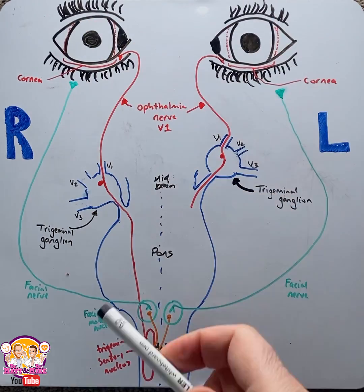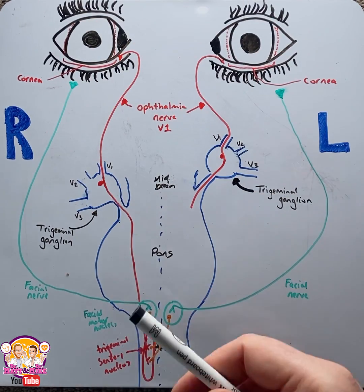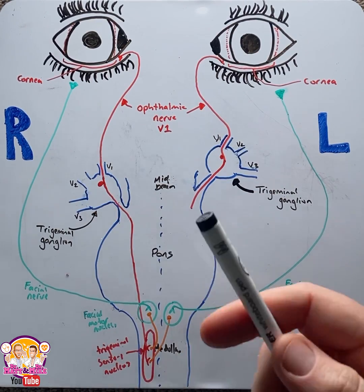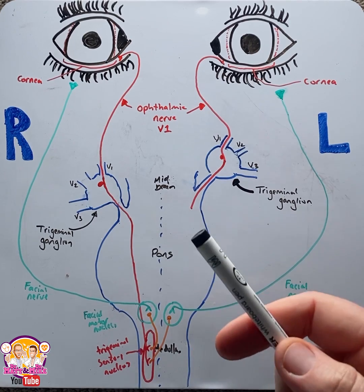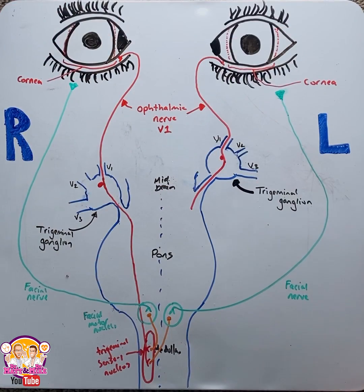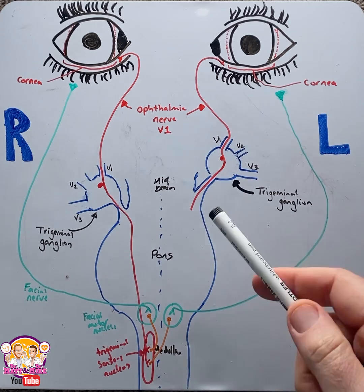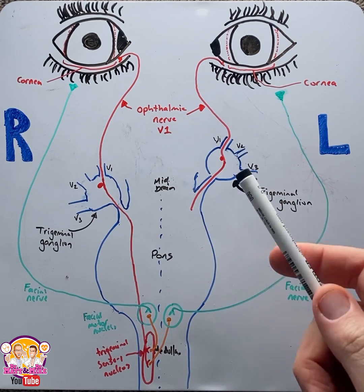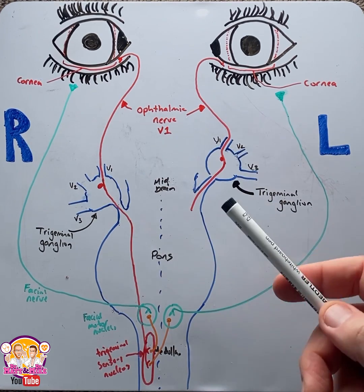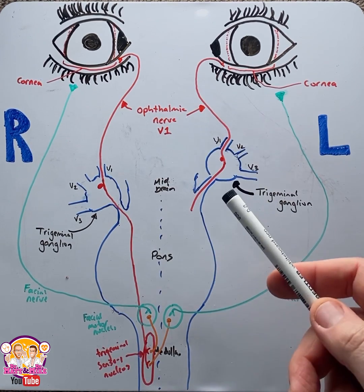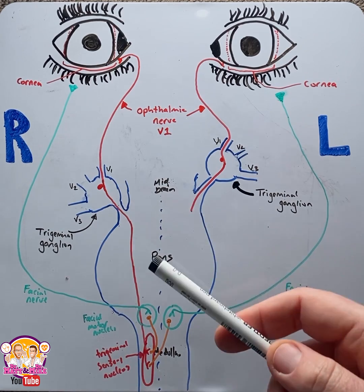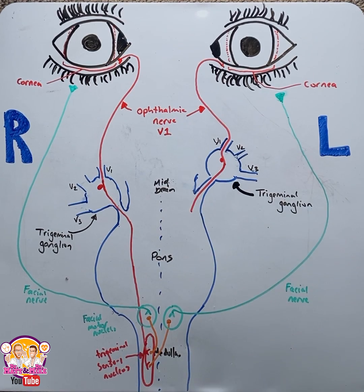The human cornea is one of the most richly innervated structures for pain in the human body. Therefore, the corneal reflex acts as a mechanism to protect the eye against harmful stimuli. Clinicians often test the corneal reflex in their evaluation of patients with an altered level of consciousness, and to ascertain neurological prognosis and even to determine brain death.